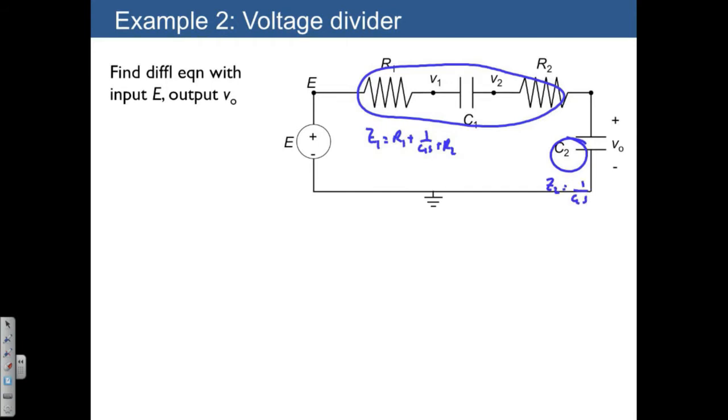Using the voltage divider, we get VO is equal to Z2 over Z1 plus Z2 times E is equal to 1 over C2S divided by R1 plus R2 plus 1 over C1S plus 1 over C2S, all multiplied by E.